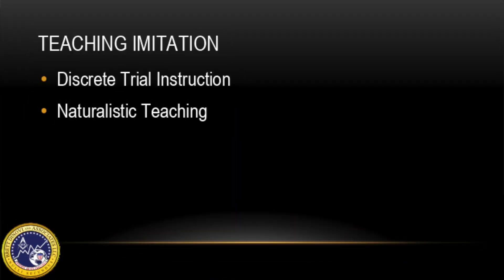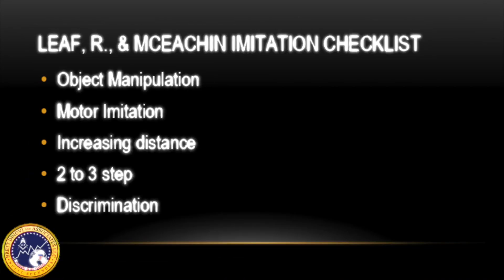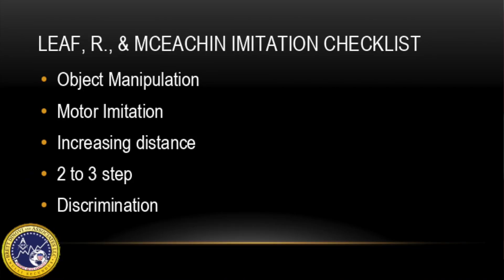Teaching imitation can be completed through discrete trial instruction or through naturalistic teaching. In the text work in progress, Leitham and McKechen developed a non-verbal imitation checklist — a resource that categorizes imitation into various subsets that systematically become more complex, beginning with object manipulation, then moving to motor imitation, then increasing distance, two to three step directions, discrimination, and chaining as well.